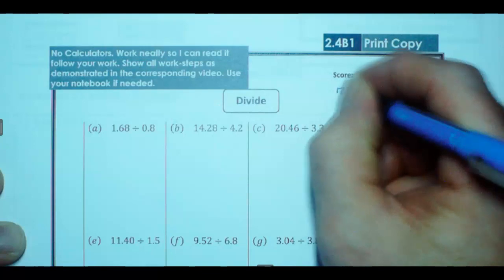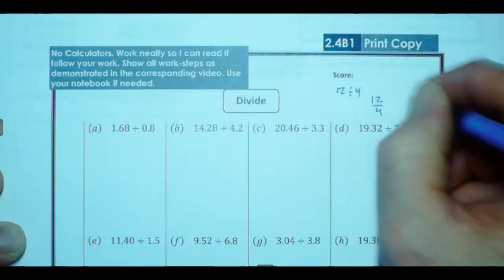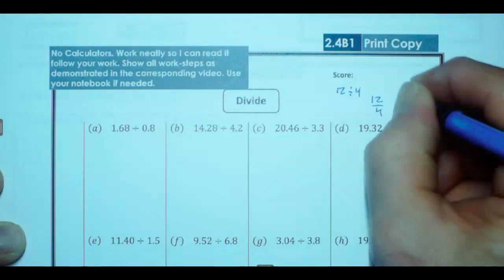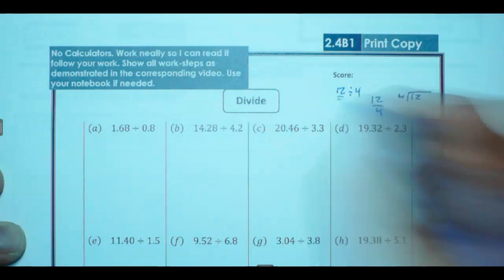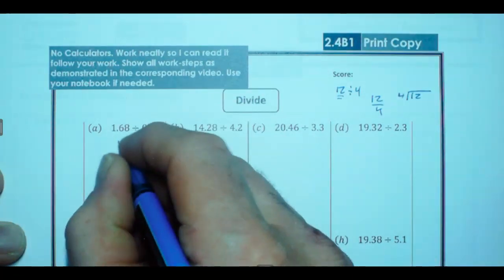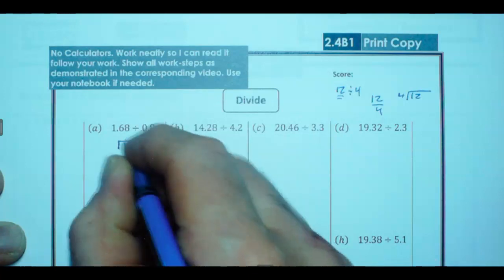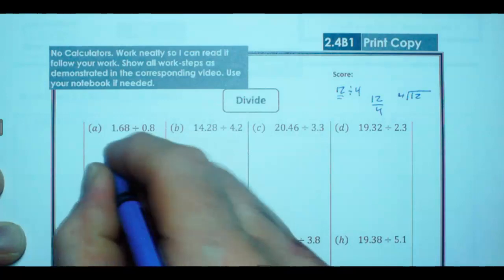So just a quick reminder that 12 divided by 4 is equal to 12 divided by 4, and it's equal to 12 divided by 4. So this first number is going to go inside the house. So I have 1.68, and I'm going to divide that by 0.8.